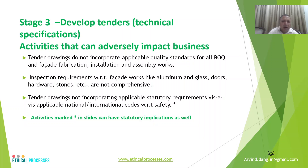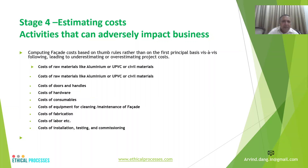Some of these items, as marked with an asterisk in the presentation, can have statutory implications. Stage four is estimating the cost of the façade, which is very important. Some designers go by thumb rules, but the accurate approach is to incorporate every component: cost of raw materials like aluminum, cost of doors and handles, other hardware and consumables, cost of equipment for cleaning and maintaining the system, cost of fabrication, cost of labor, and cost of installation, testing, and commissioning.